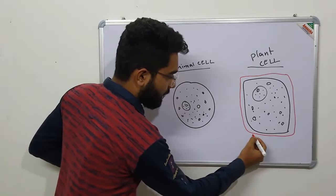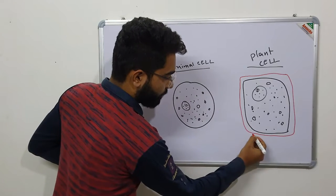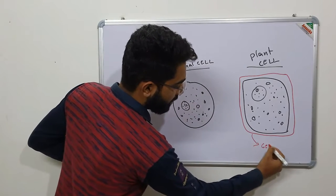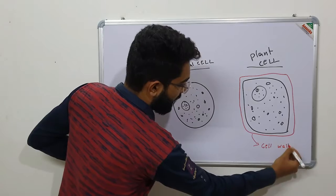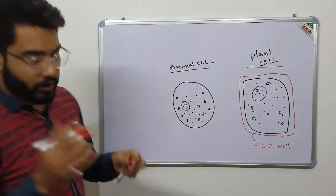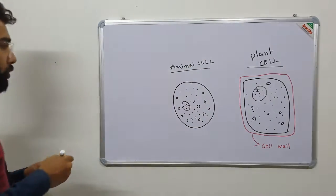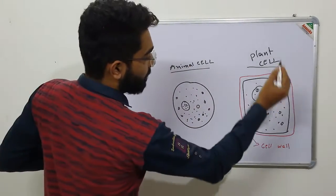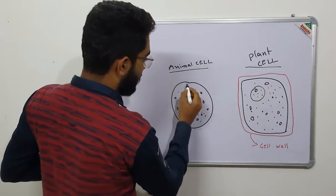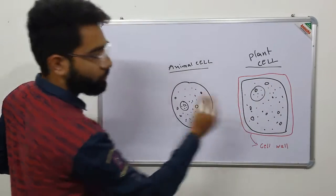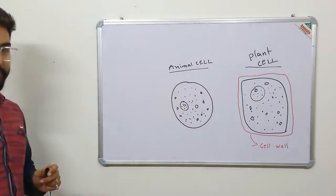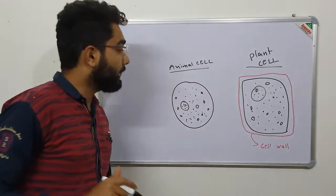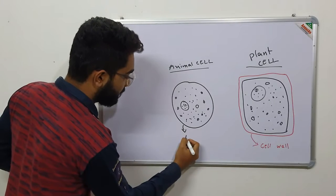This red boundary here is the cell wall. And the red boundary which is present here — this is the cell membrane.